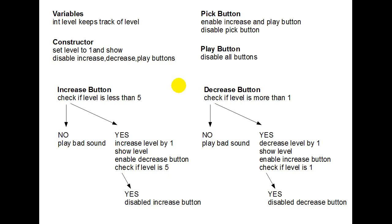For example here, you'll see one important thing that you have to think about before you start coding your program is what variables does your program need? This little program is very simple — it only has one. Integer Level. Keeps track of Level. Just a little point form to show you've thought about it and you know that variable is needed there.